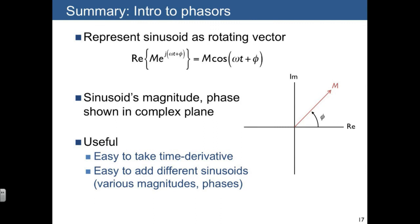Let's summarize. We introduced the concept of the phasor, which is the use of a complex exponential as a fancy way to write down a sinusoid, m cosine omega t plus phi. Here, we use the real part of the complex exponential, which represents a vector that's rotating around in the complex plane.